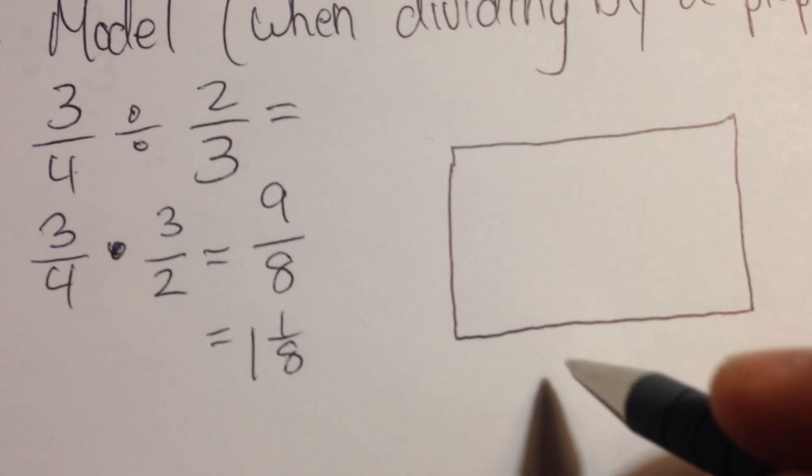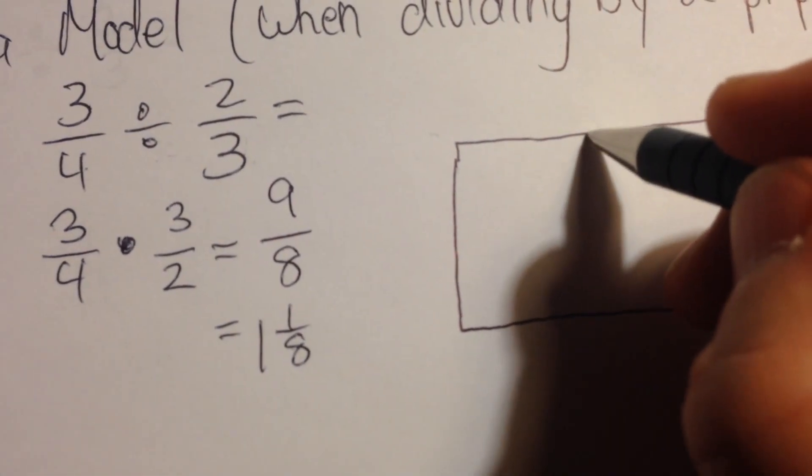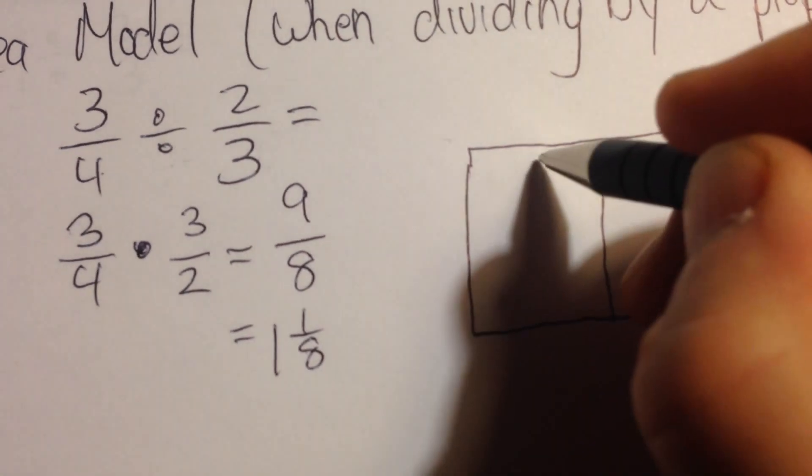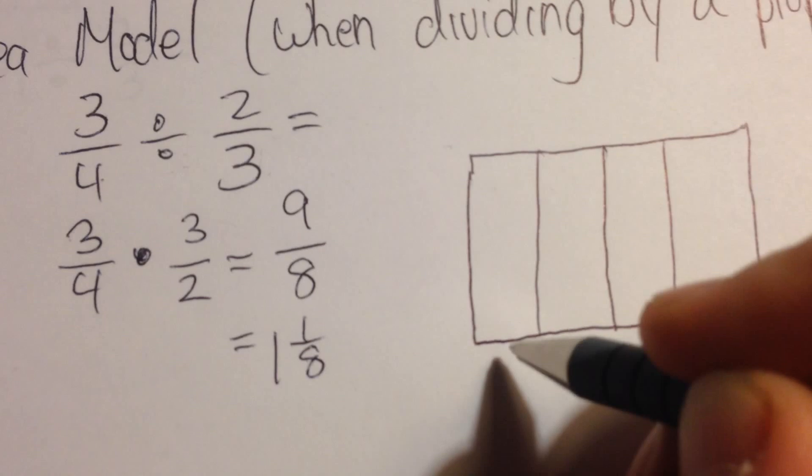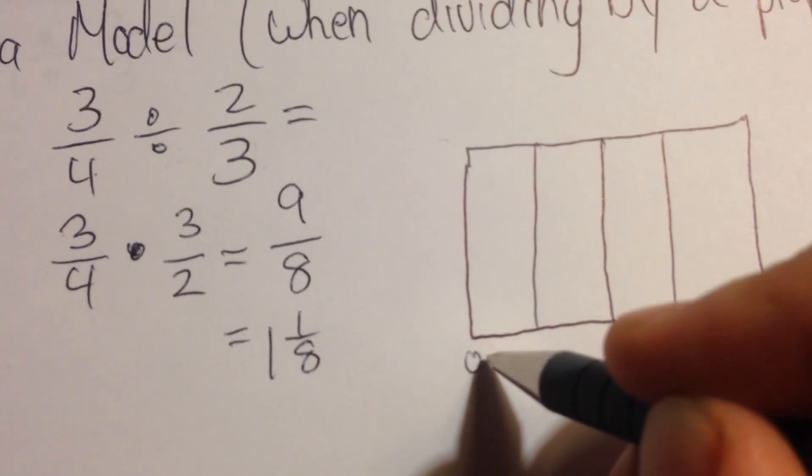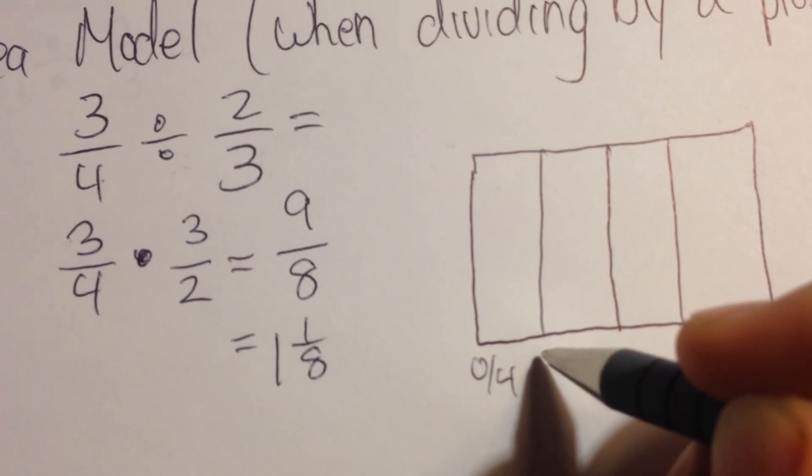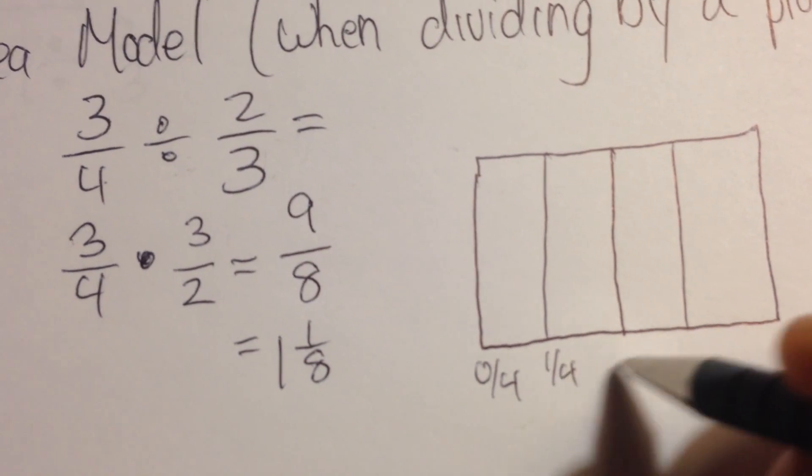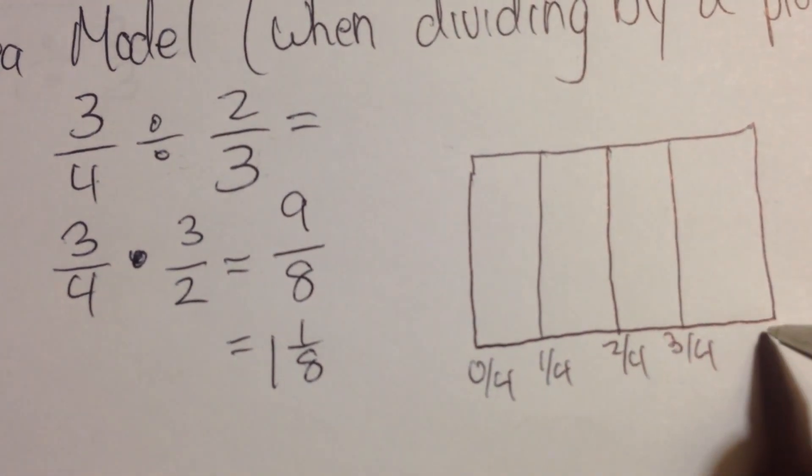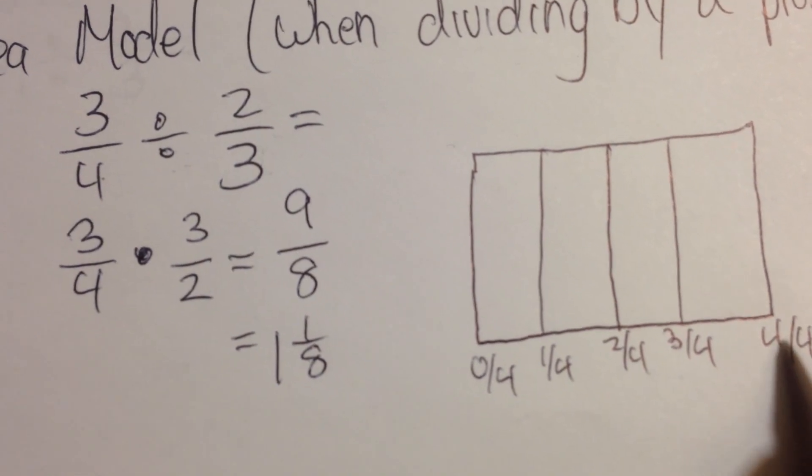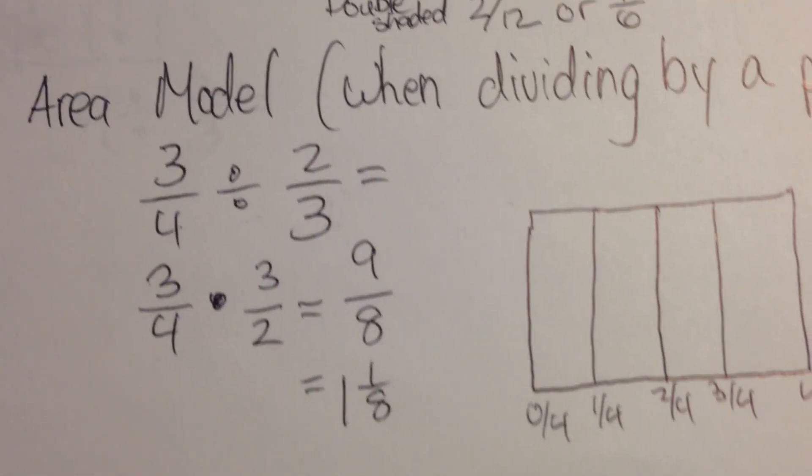If I draw my 3 fourths, it's easy to draw a fourth if I break it in half, and then break each side in half. I'm going to need to label it: 0 fourths, 1 fourths, 2 fourths, 3 fourths, and 4 fourths. And I'll color in my 3 fourths.